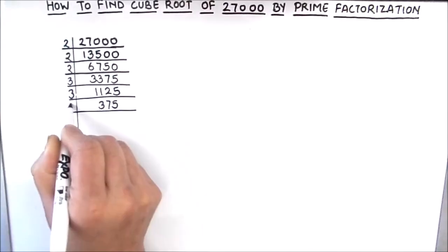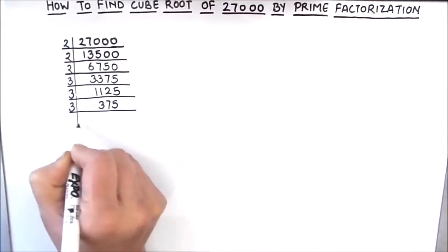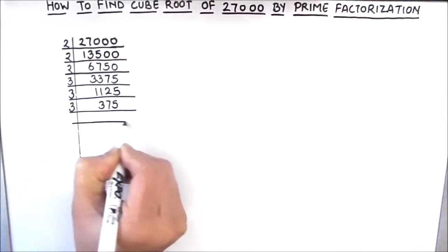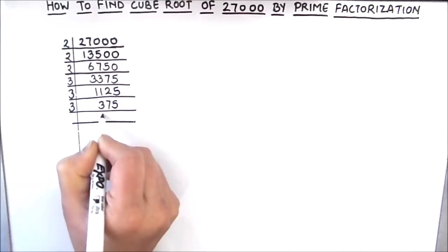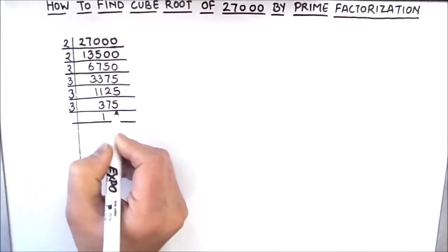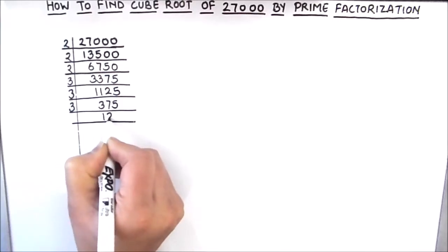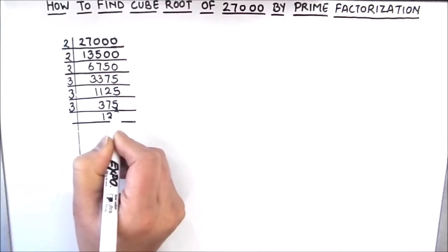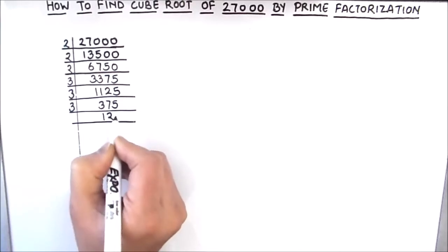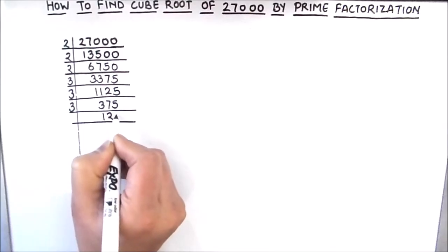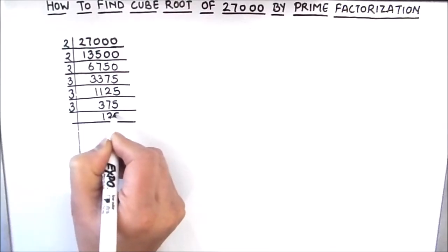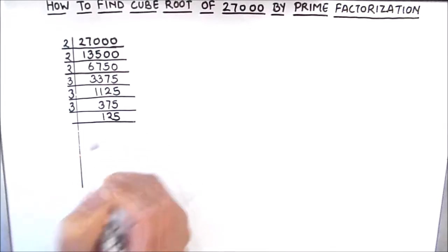This is again divisible by 3. 3 times 1 is 3, 3 times 2 is 6, 1 is carried over this becomes 15, so 3 times 5 is 15. So 375 divided by 3 gives us 125.